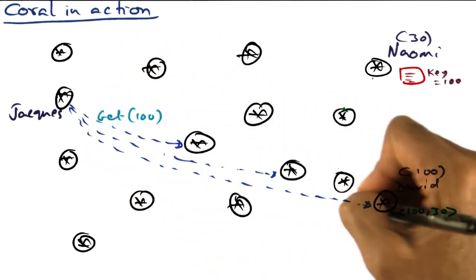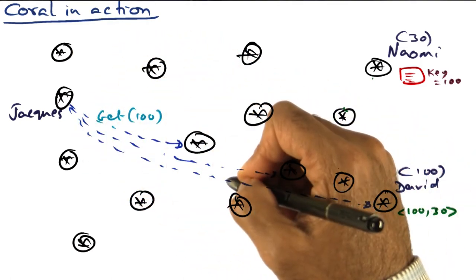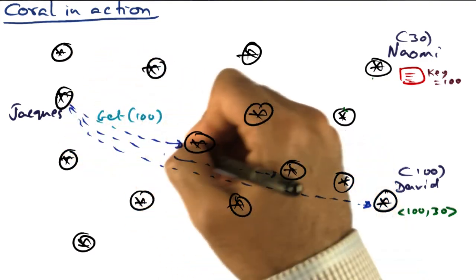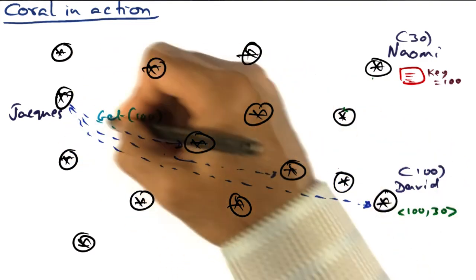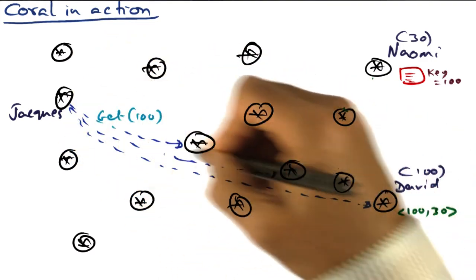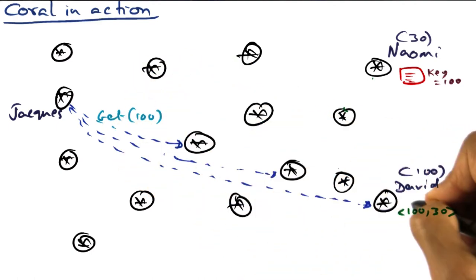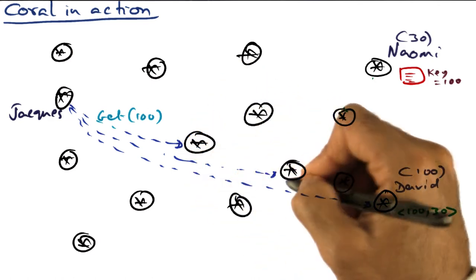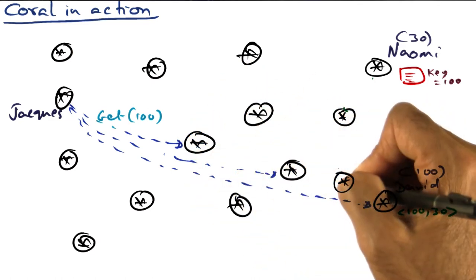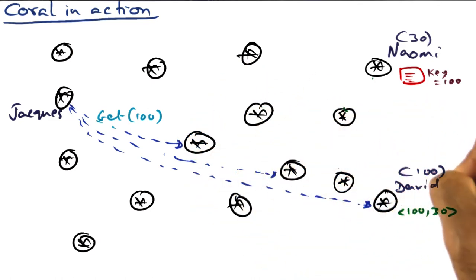And the get call follows the same key base routing algorithm of having the distance to the destination. And so we make a whole bunch of RPC calls, finally get to the destination itself, because none of the intermediate nodes have this key value pair. So we get to David's computer.